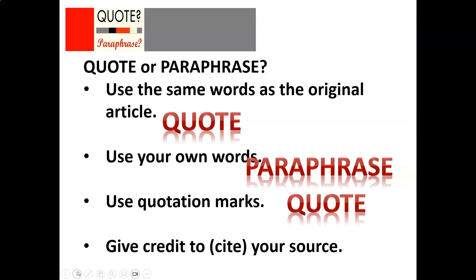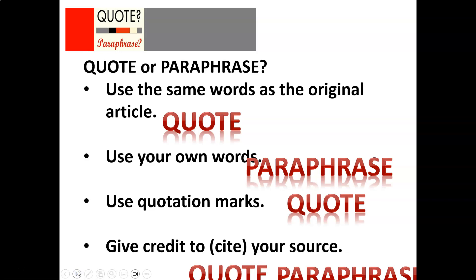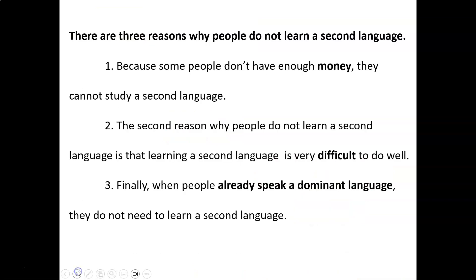You use quotation marks only for a quote. In English, quotation marks go above the line at both the beginning and the end of the quote. 'Give credit to or cite your source' applies to both a quote and a paraphrase — we always need to say where our quote or paraphrase came from.